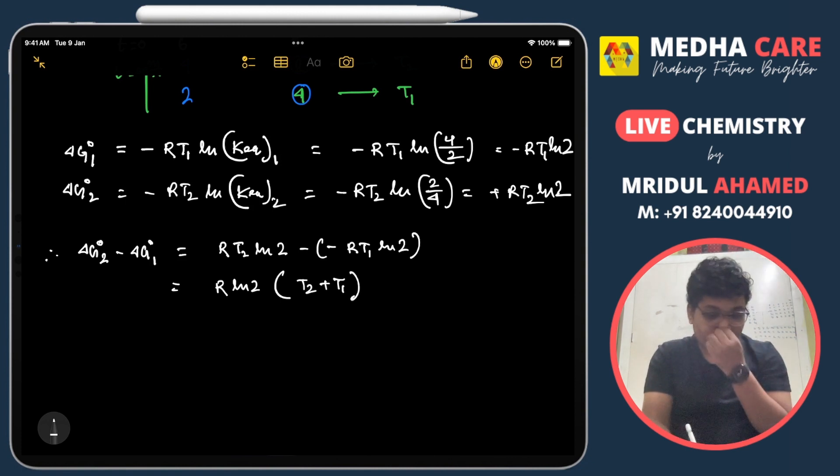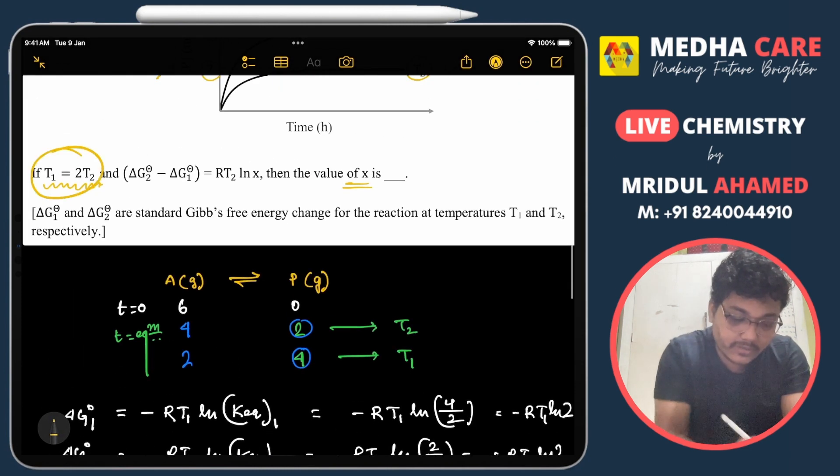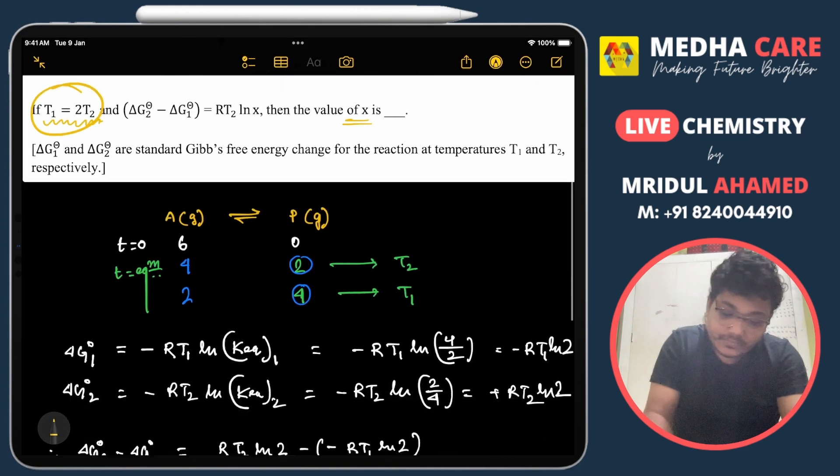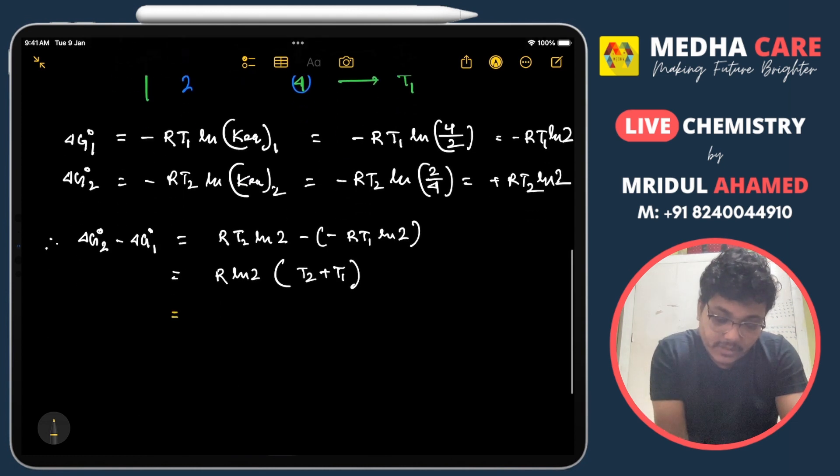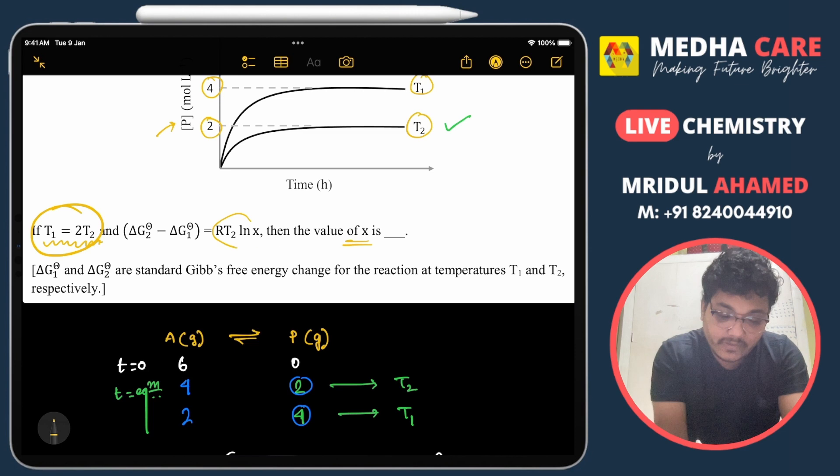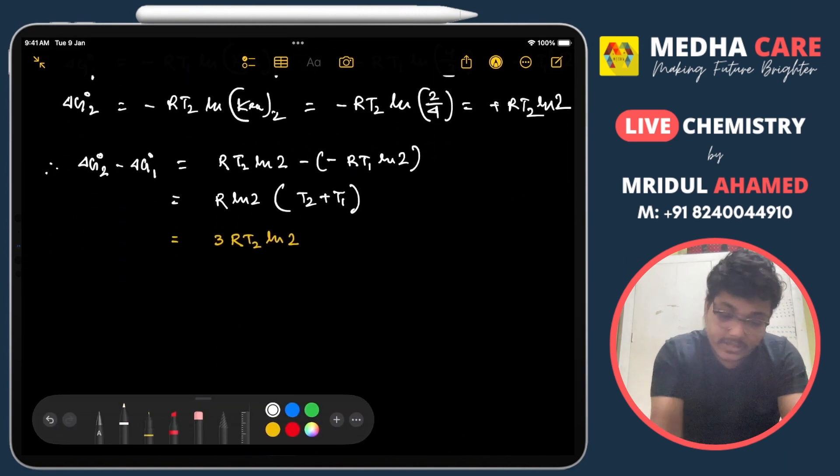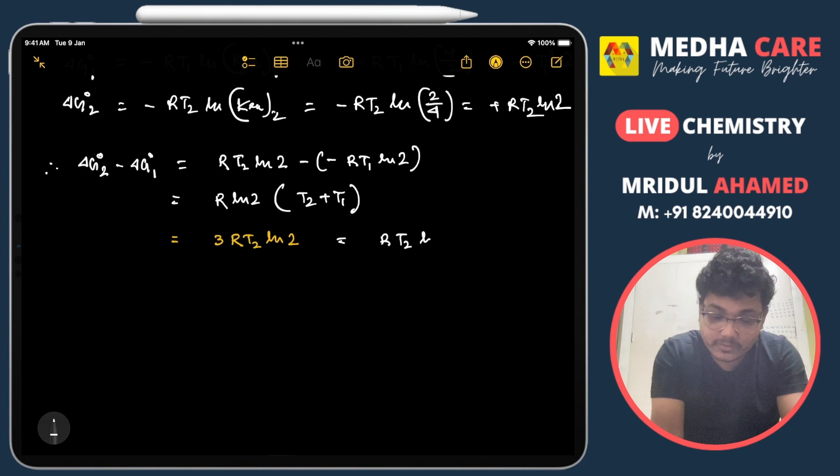It is also given in the question that T1 is 2T2. So then we can write 3RT2 ln 2. This value is also given as RT2 ln x. Therefore, RT2 ln x equals 3RT2 ln 2, so x equals 2³, which is 8.